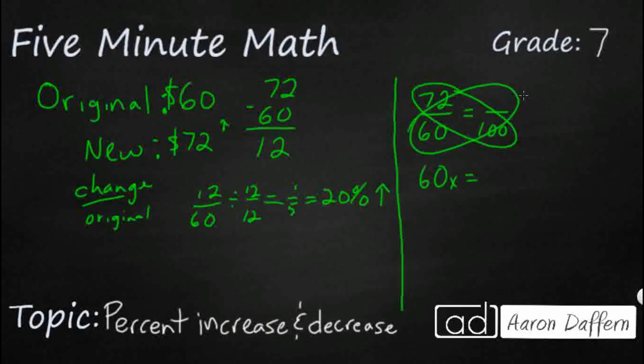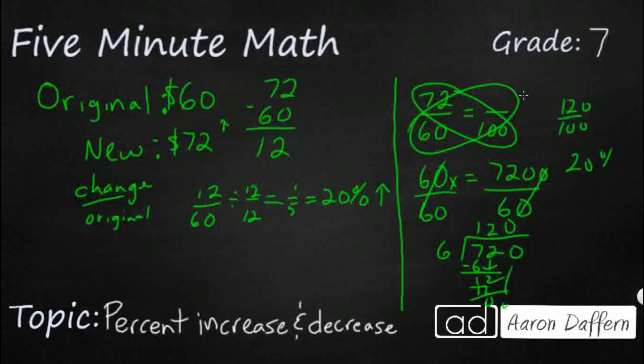So 60x is going to equal 7,200. So we simply divide both sides by 60. And let's go ahead and drop that. So we got 6 into 720. That's going to be, bring down this, that's a 2. And that's going to be a 0. So 120, it's 120 over 100, which means it is 20% over.